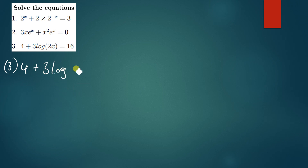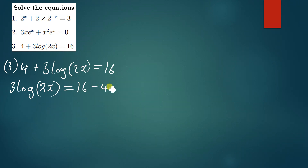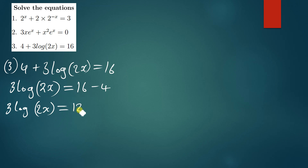This is also a very simple question. The first thing you do is pair the like terms — move the log term to one side of the equal sign so you remain with 3 log(2x). The most important thing when dealing with logarithms is to know the rules of logs. So 16 minus 4 gives 12, and we have: 3 log(2x) equals 12.